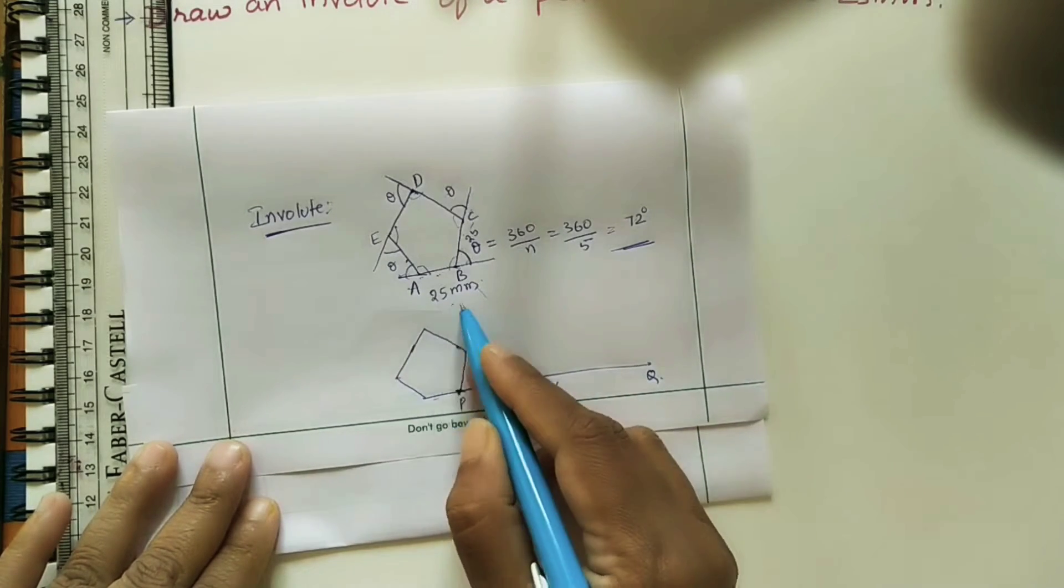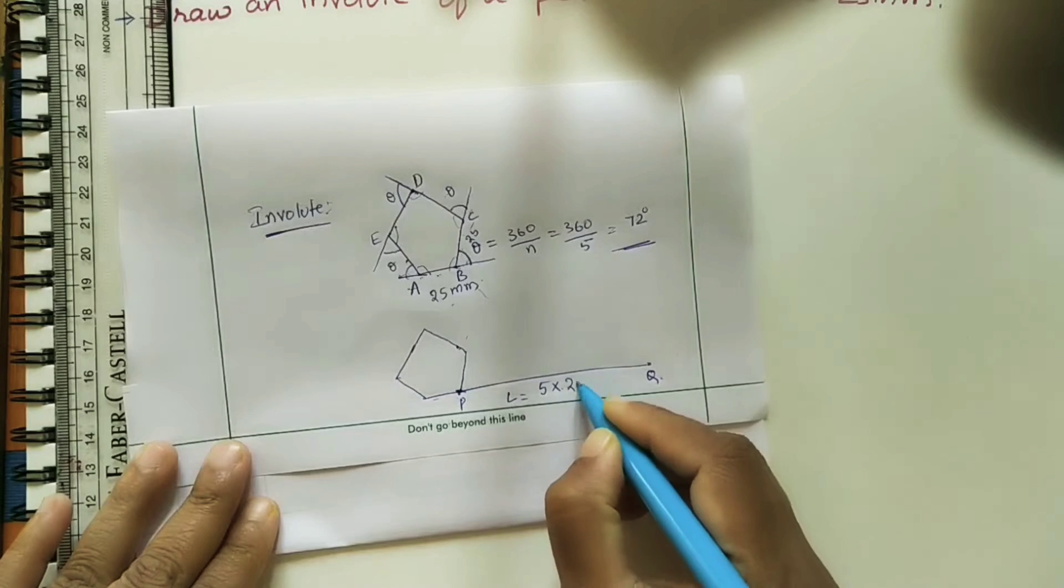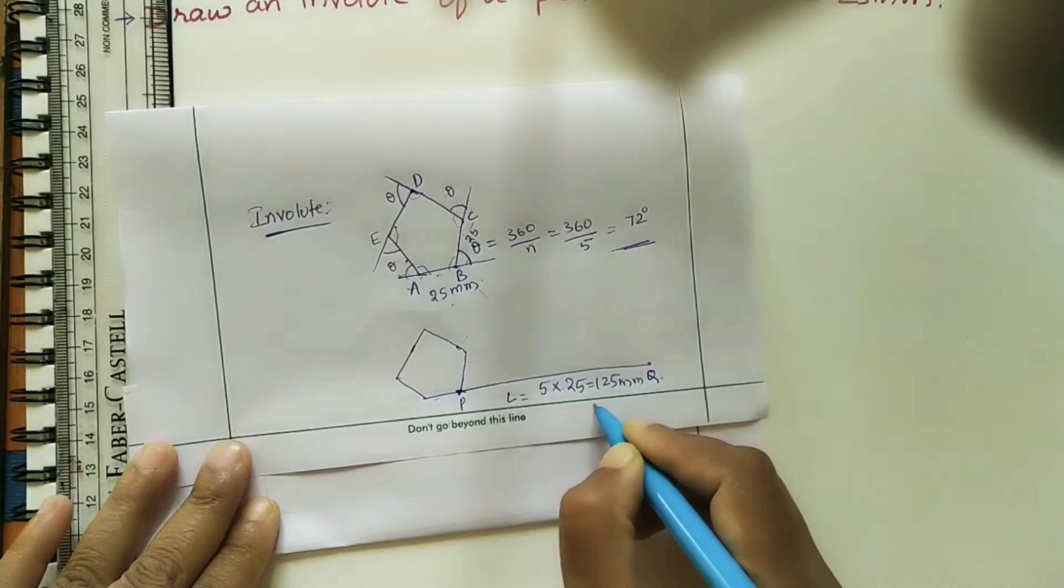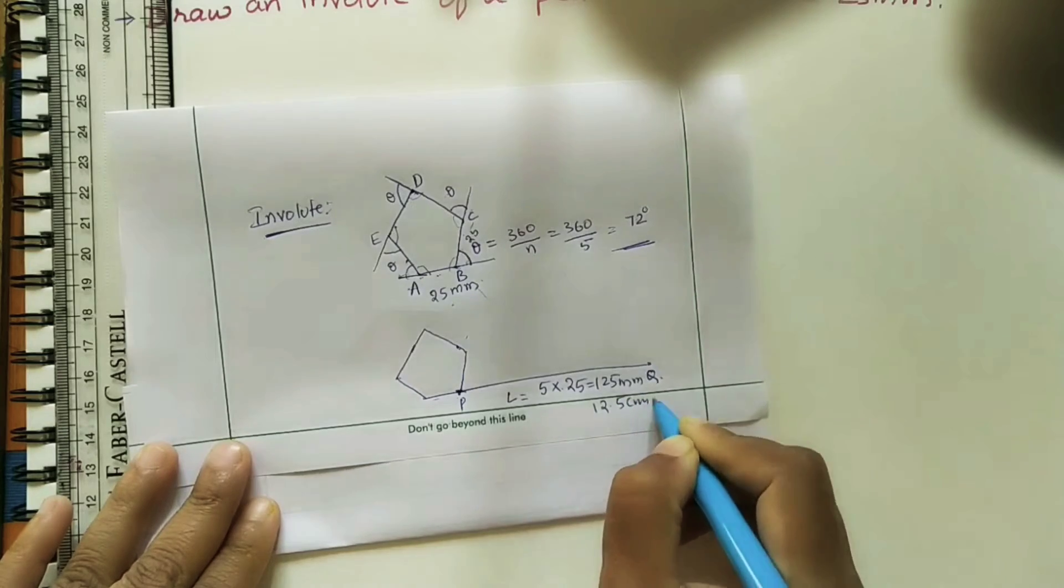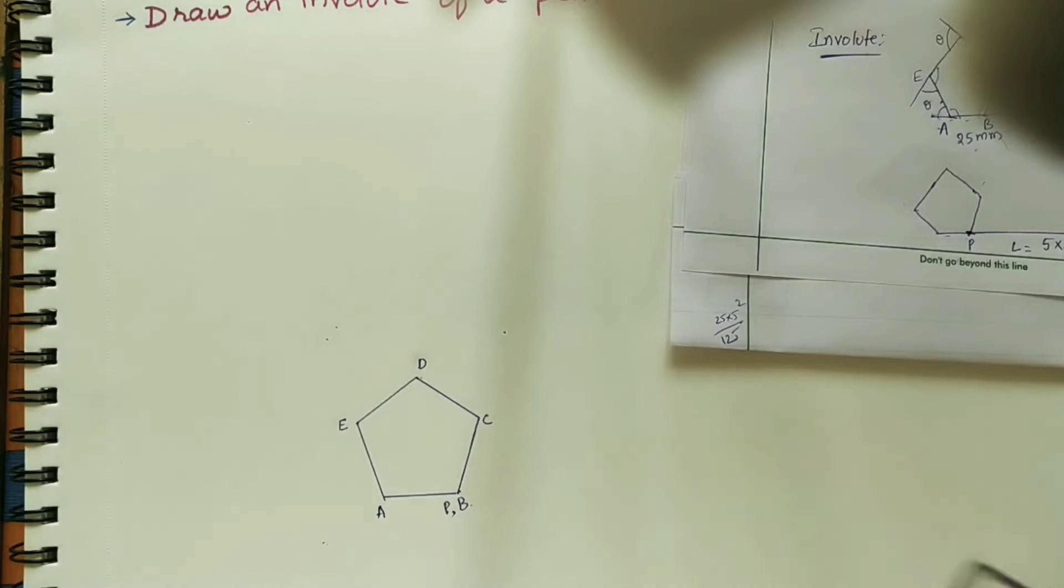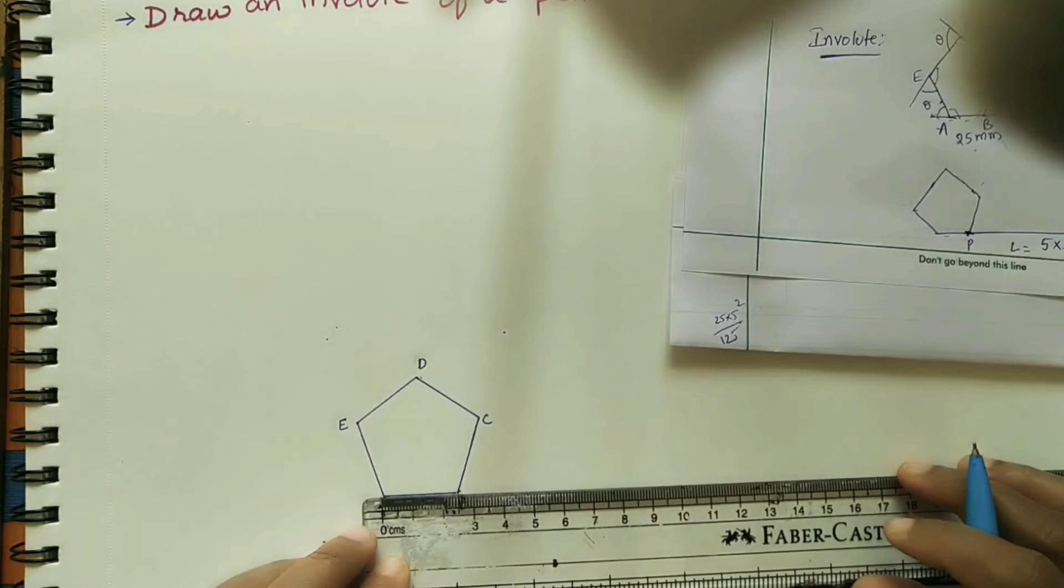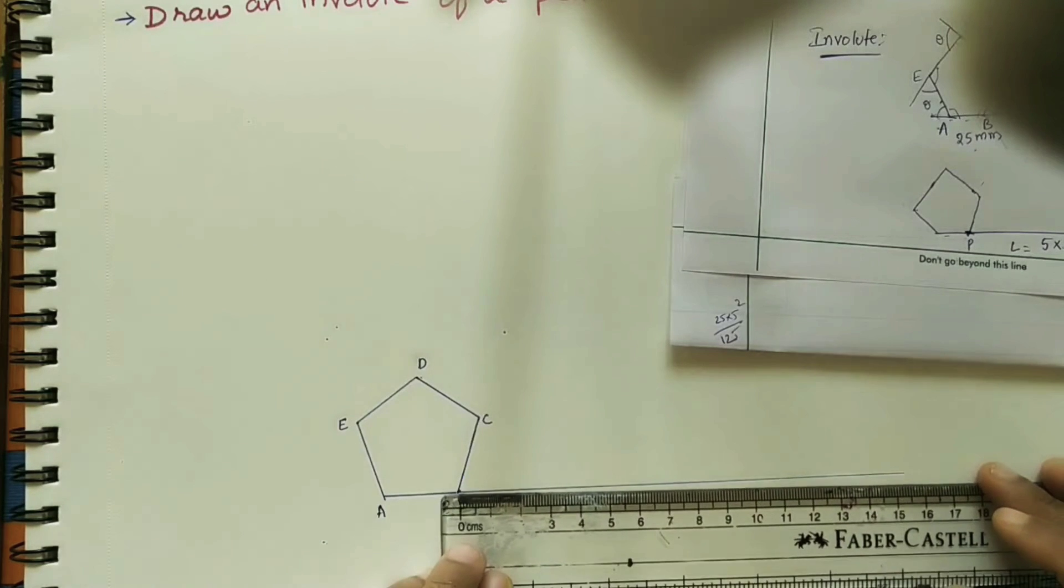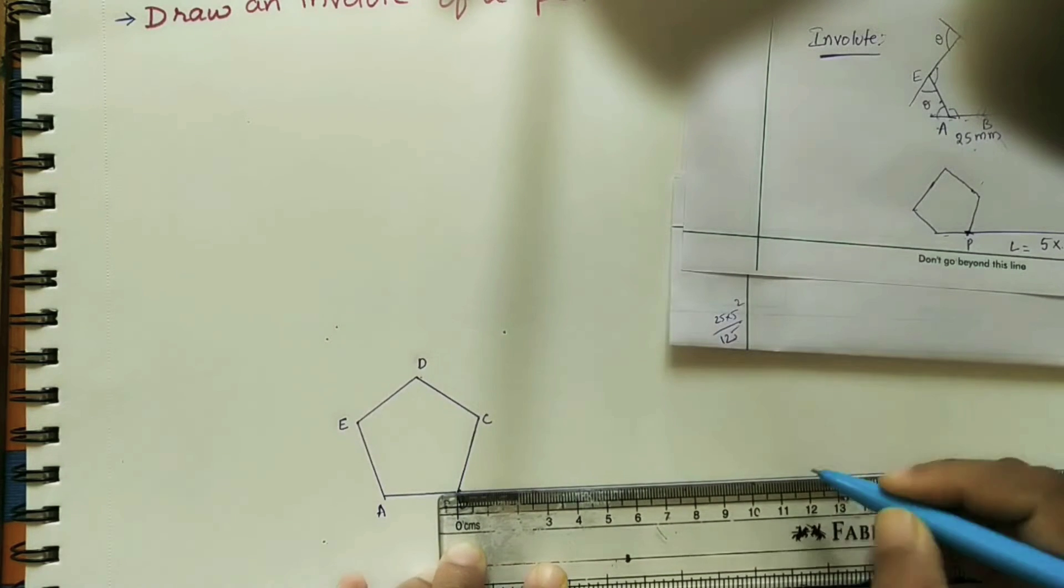It is five sides of the polygon times the side length of the polygon, 25. It is 125mm, that is 12.5cm. So PQ length is 12.5cm. By using a scale, from the P point, just draw one line here. On it, mark 12.5cm.